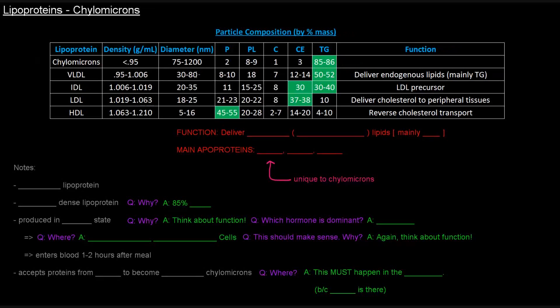Okay, so first up is the chylomicrons. Let's figure out what's going on with them. They are the largest lipoprotein and the least dense lipoprotein.